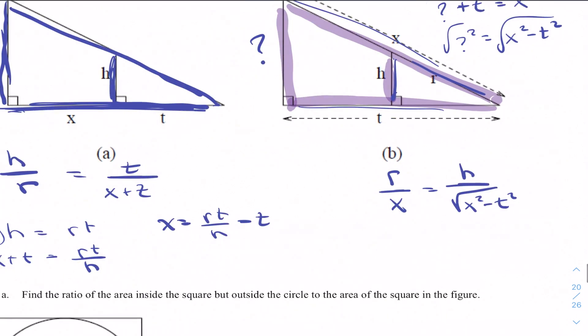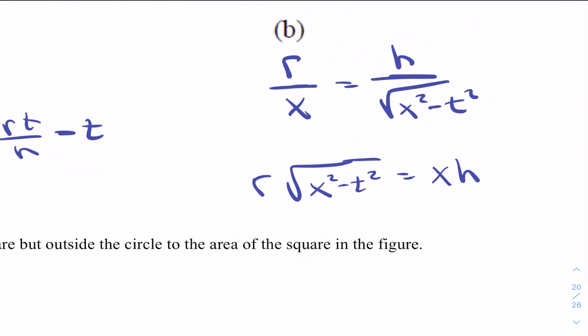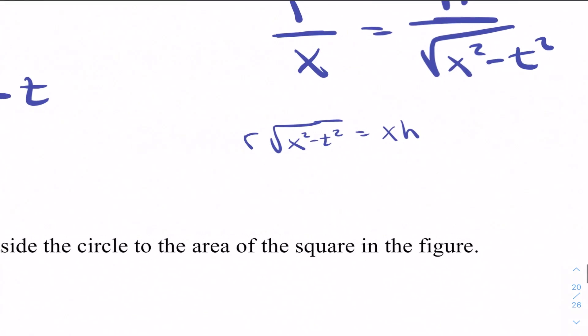Now we have a comparison between what we were given h to this missing side piece. And now we can do the same thing, cross multiply. So we'd be left with r square root x squared minus t squared equals xh. And now we do a little more work. This is going to involve a quadratic. So in order to solve all of these, we would get the square root by itself. So it would be the square root x squared minus t squared is equal to xh over r. And we'd square both sides, x squared minus t squared is equal to x squared h squared over r squared.